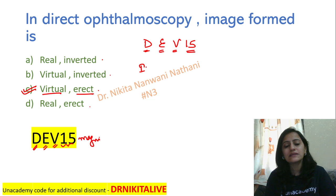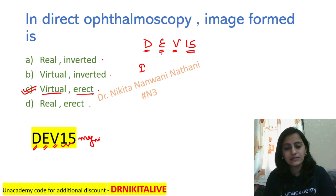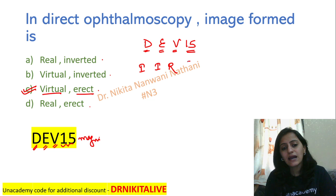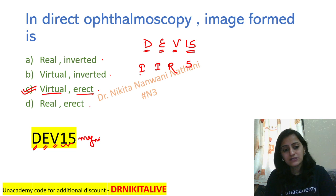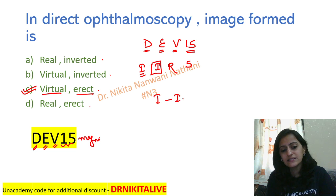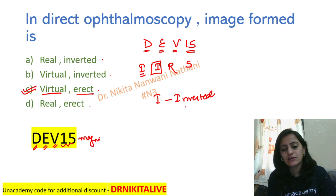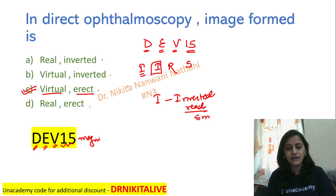The opposite applies to indirect ophthalmoscopy. What is erect in direct becomes inverted in indirect, what is virtual becomes real, and it is 5 times magnified. Remember: I for I — indirect gives an inverted image, which is a real image, and it is 5 times magnified.